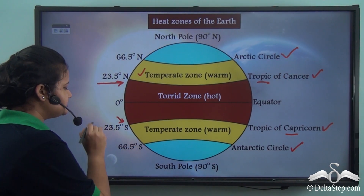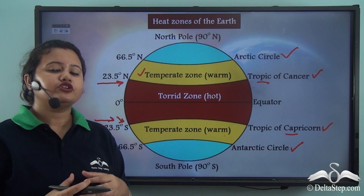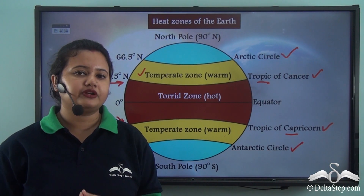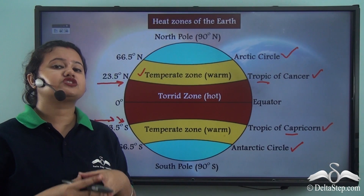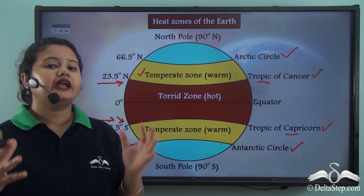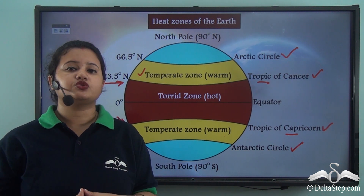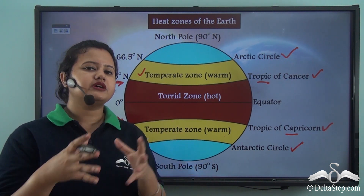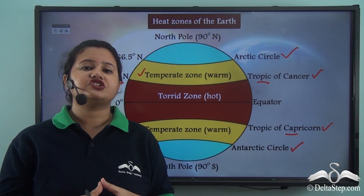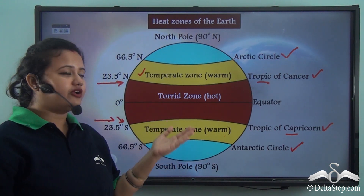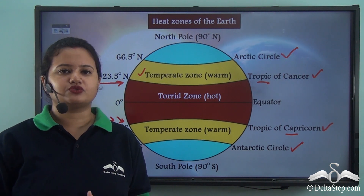During winter, the sun's rays are vertical at the Tropic of Capricorn, so the southern part of the temperate zone experiences higher temperature during winter, while the temperature is quite low in the northern part. So the temperate zone experiences warmer summers and cooler winters — in other words, there is a significant change in temperature between summer and winter.